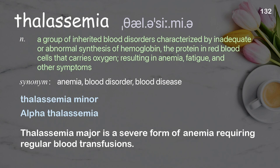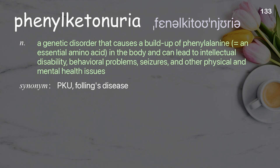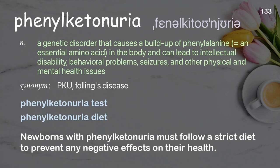Phenylketonuria: a genetic disorder that causes a buildup of phenylalanine — an essential amino acid — in the body, and can lead to intellectual disability, behavioral problems, seizures, and other physical and mental health issues. Examples: phenylketonuria test, phenylketonuria diet. Newborns with phenylketonuria must follow a strict diet to prevent any negative effects on their health.